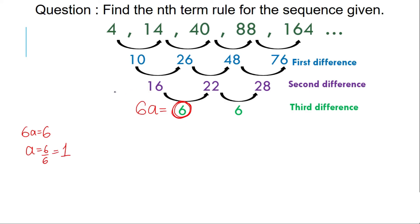Now to find b, my equation is going to be 12a plus 2b equal to the first term of the second difference. So 12a plus 2b equals 16. I will be putting the value for a here. So I have 12 times 1, so 12 plus 2b giving me 16. 2b is equal to 16 minus 12, 2b is equal to 4, and my b is equal to 4 divided by 2 giving me 2.